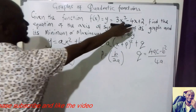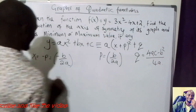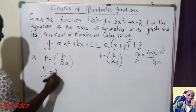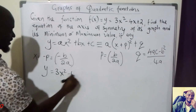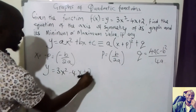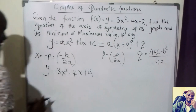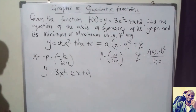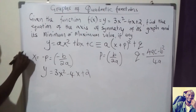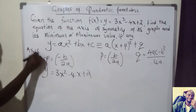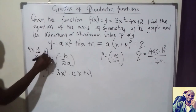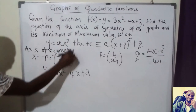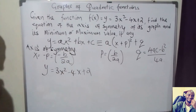When you are given a quadratic equation like this one — y equals 3x squared minus 4x plus 2 — you need to identify which one is a, which one is b, and which one is c. Our axis of symmetry will be given by x equals negative b over 2a.